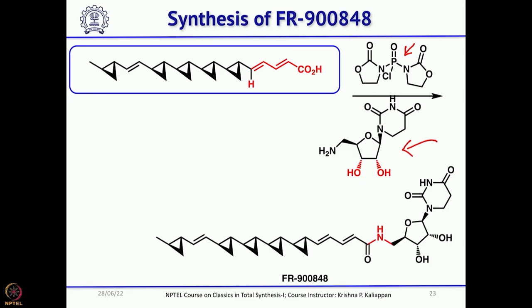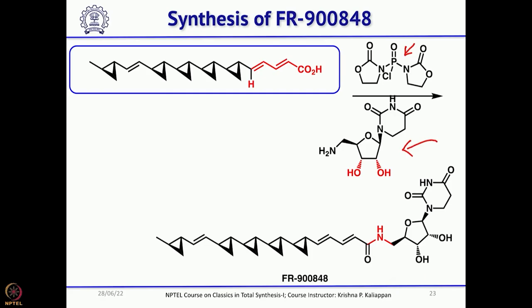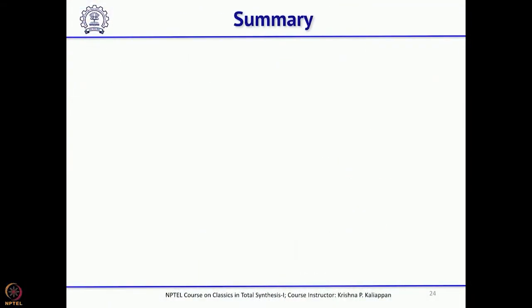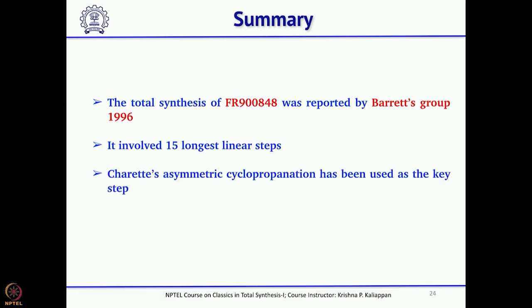Looking at this whole synthesis, the key reaction is the introduction of cyclopropanes — all five cyclopropanes were successfully introduced and three E,E double bonds were established, with no major difficulties in making the nucleoside. Overall, the total synthesis of FR900848 was accomplished in 15 longest linear steps by Barrett's group, with Andrew Charette's asymmetric cyclopropanation used as the key step for introducing all five cyclopropanes. With this, we have discussed the total synthesis of two natural products having cyclopropane rings and will now move to natural products and non-natural products having four-membered rings as the key substructure.